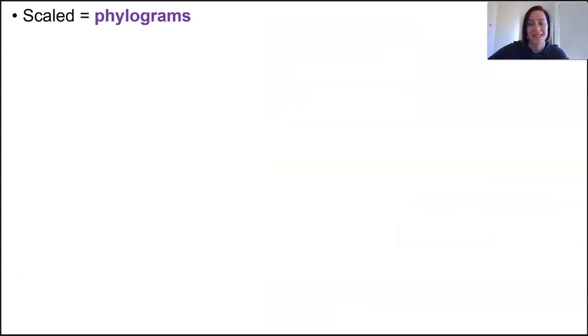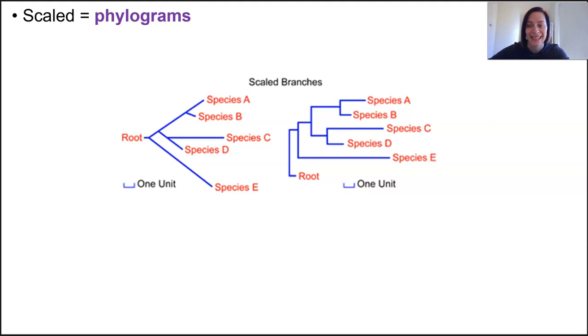Phylograms are scaled, and the branch length indicates the amount of time or genetic change that's accumulated. Essentially, this is the amount of evolutionary divergence between the groups or the species or whatever's being compared.